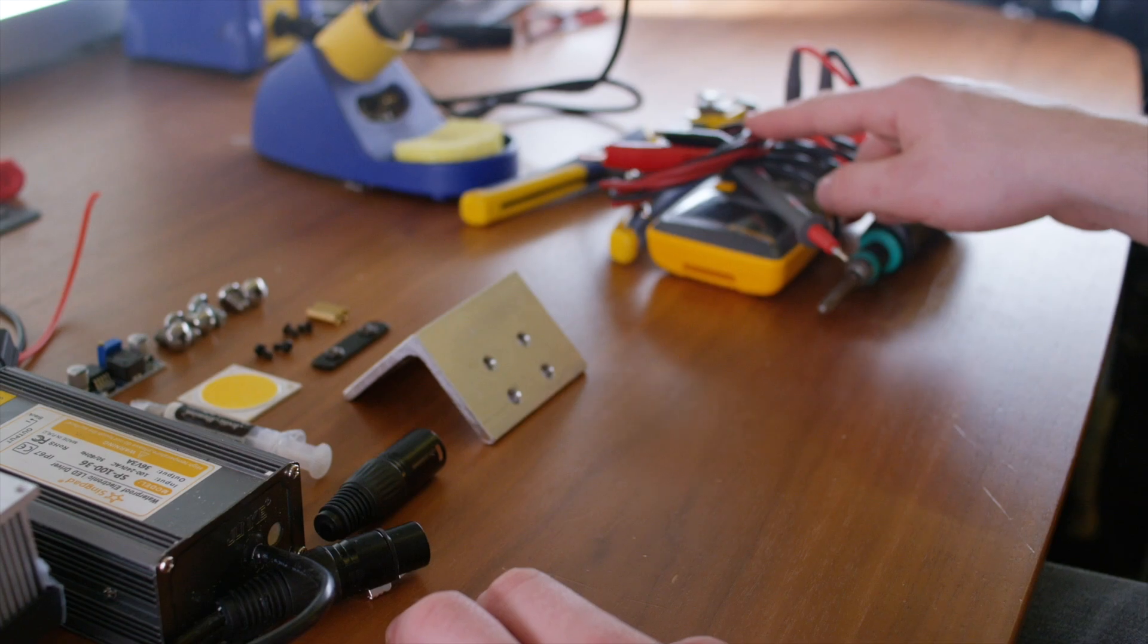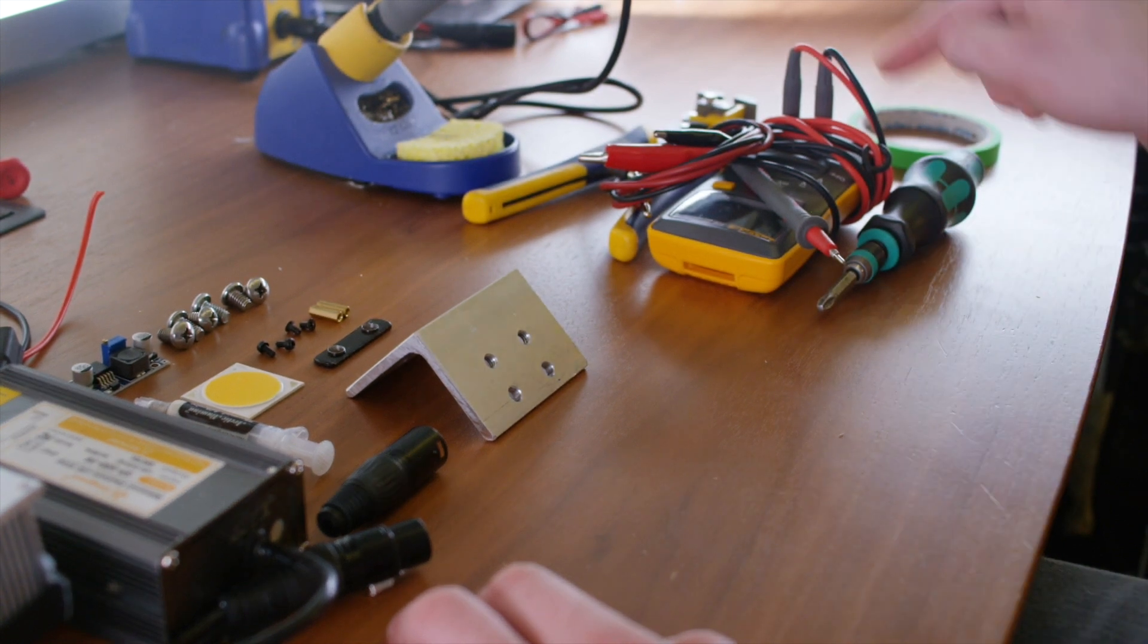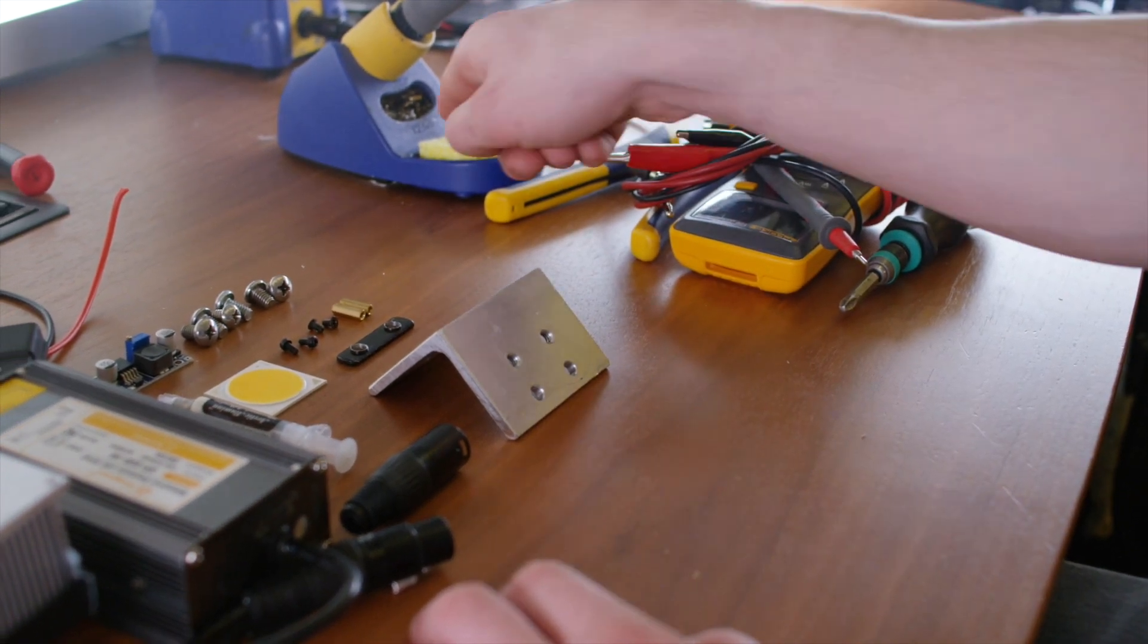In order to build this kit, you're going to need a multimeter, a Phillips 3 screwdriver, some wire strippers, and a soldering iron.